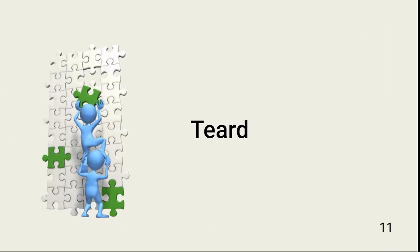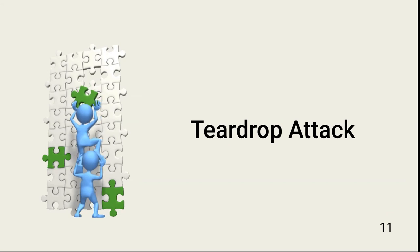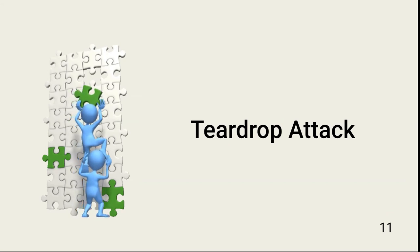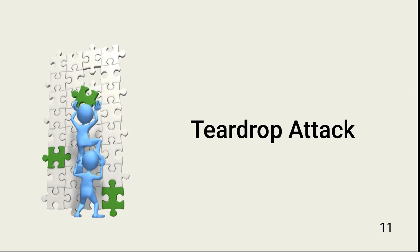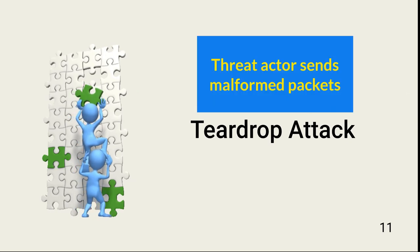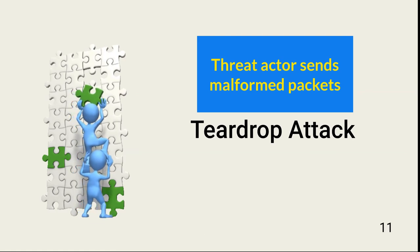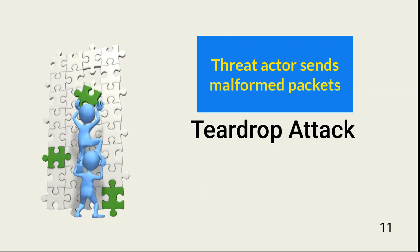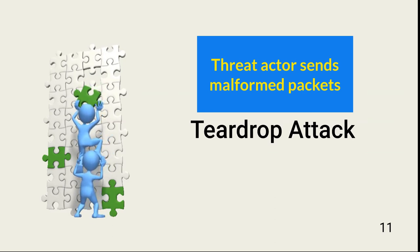Another network protocol attack that can cause denial of service is the teardrop attack, which occurs at layer 3 in the OSI model. In a teardrop attack, the threat actor sends malformed packets that can overwhelm the target device as it attempts to manage the packets. Now let's move on from denial of service to other types of network attacks.